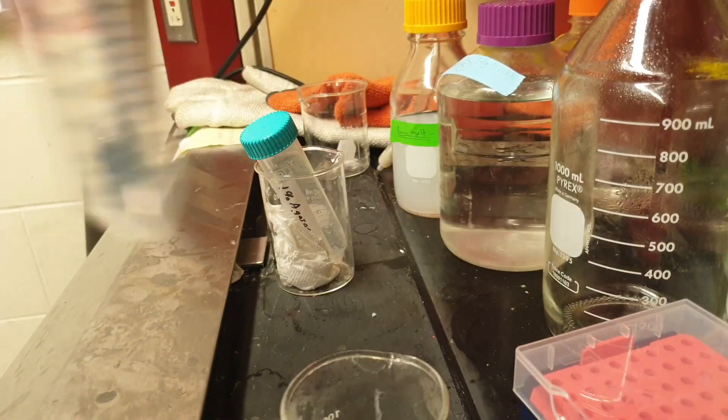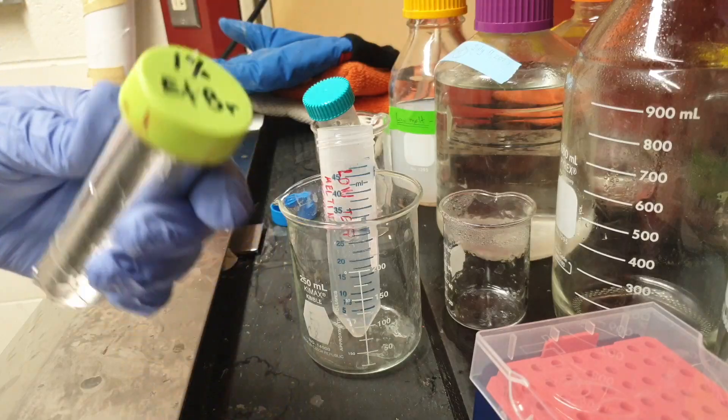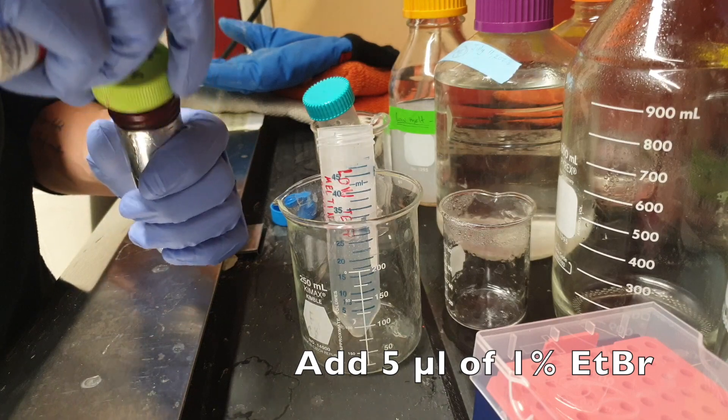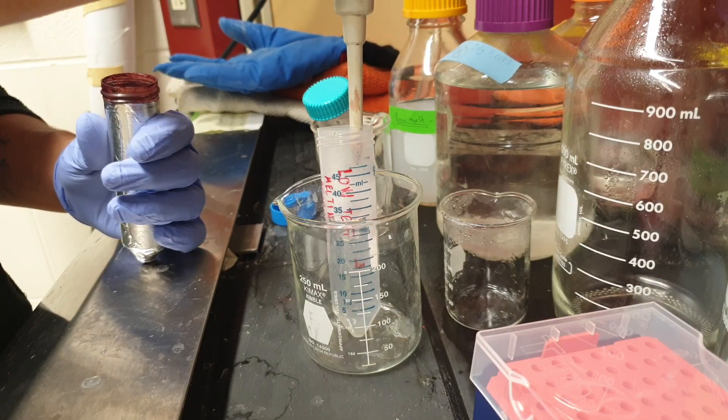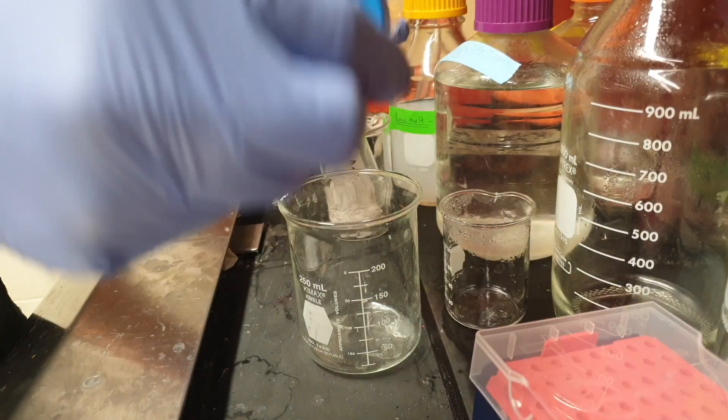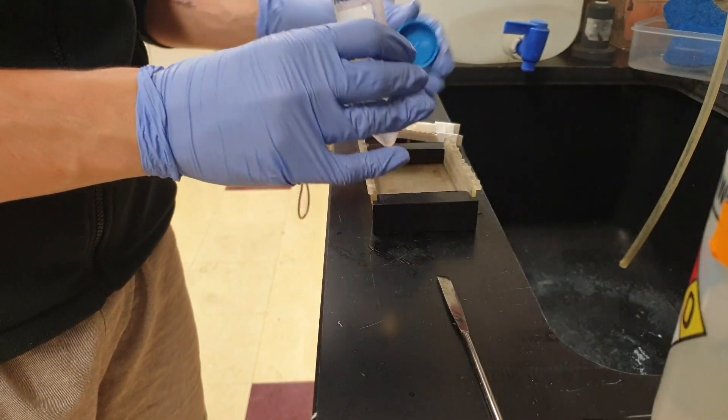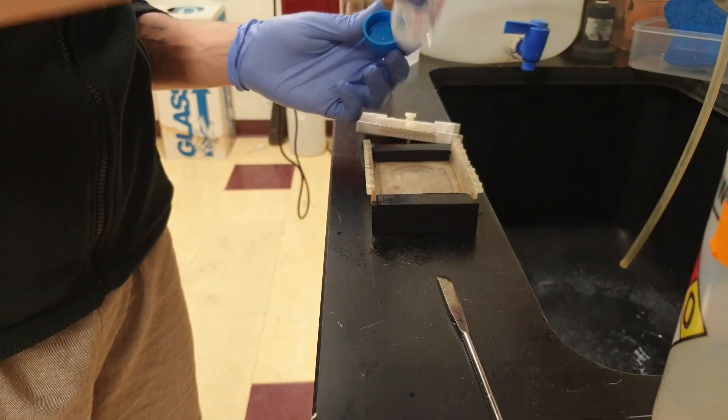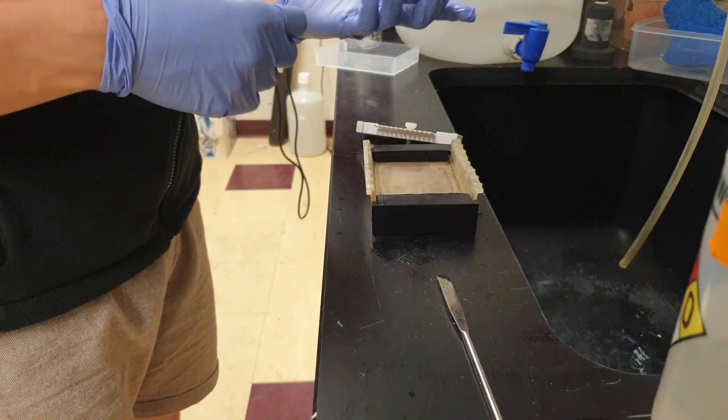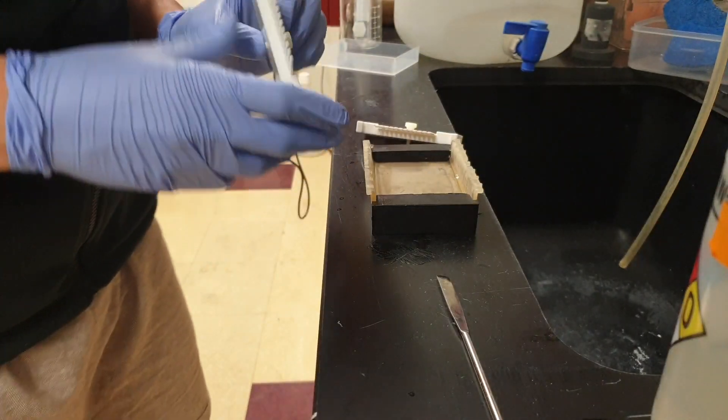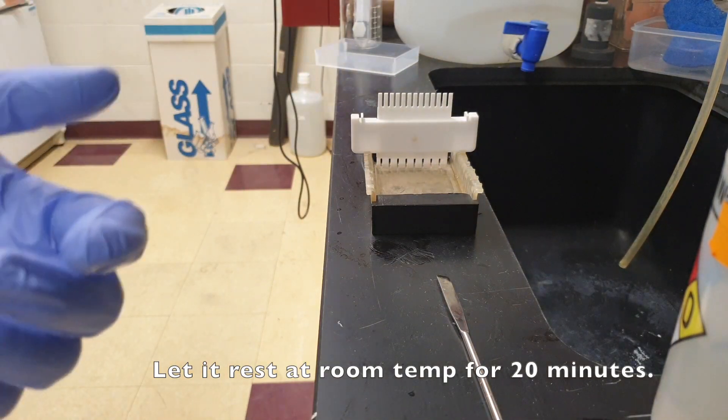Adding 1% ethidium bromide, 5 microliters. Let it wait for 20 minutes.